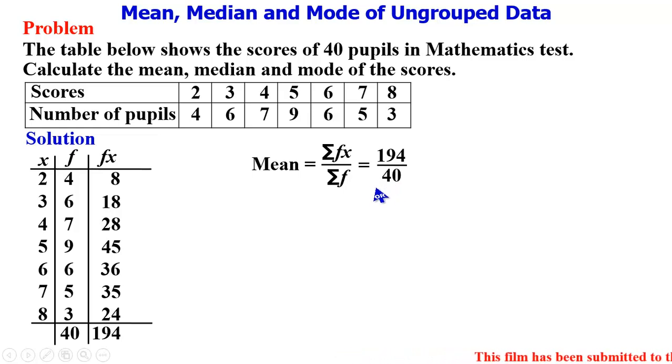Inputting this in our calculator, we have the mean to be 4.85. So with this we've gotten the mean. We then go ahead to find the median.